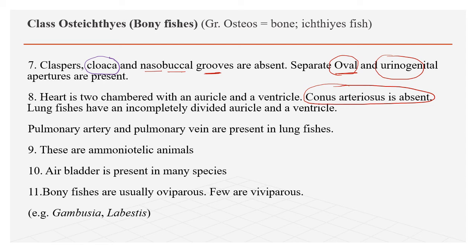Lung fishes have an incompletely divided auricle and ventricle, which is considered evidence that amphibians originated from fish descendants. Pulmonary arteries and pulmonary veins are present in lung fishes but not in other fishes. Osteichthyes are ammonotelic — they excrete ammonia, which is highly toxic and requires large amounts of water to excrete.